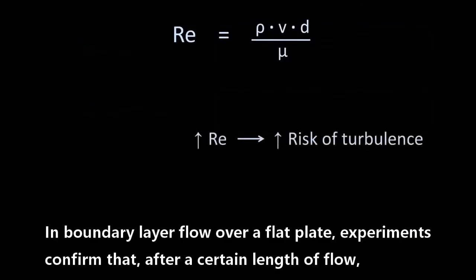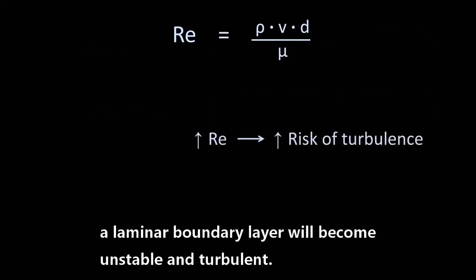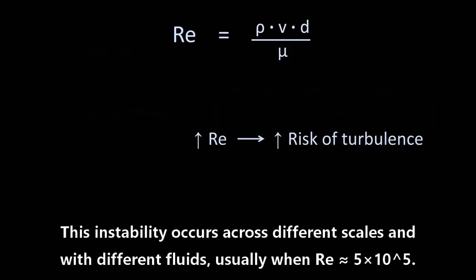In boundary layer flow over a flat plate, experiments confirm that after a certain length of flow, the laminar boundary layer will become unstable and turbulent. This instability occurs across different scales and with different fluids.